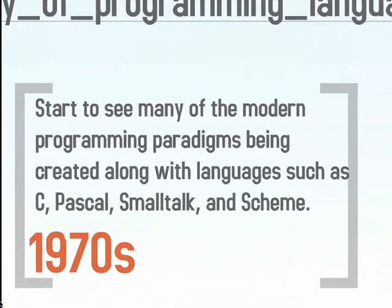We jump up to the 1970s, and this is where we actually see most of our modern programming paradigms being created. We get languages such as C, Pascal, Smalltalk — which is actually a somewhat object-oriented language — and Scheme.